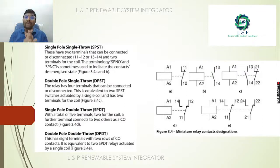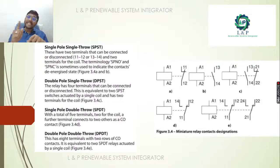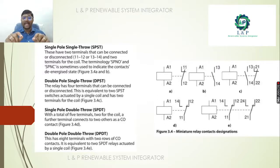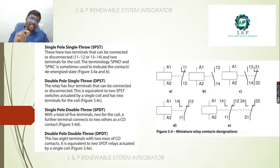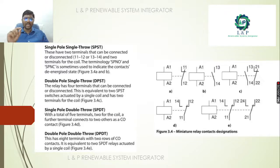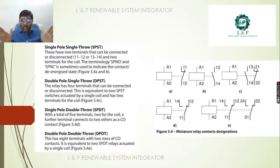The single pole double throw (SPDT) type has a total of five terminals — two for the coil and three others as a changeover contact. Next is double pole double throw (DPDT), which has eight terminals with two rows of changeover contacts. It is equivalent to two SPST relays actuated together to form a double pole double throw configuration.